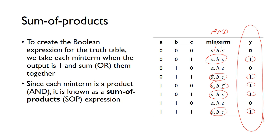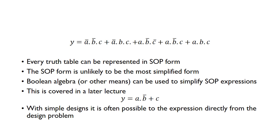With a truth table, every time there's a one we get the min term and we just OR them together. Each of these terms represents a one in the output column. This is called a sum of products expression, and every truth table can be represented by a sum of products expression.